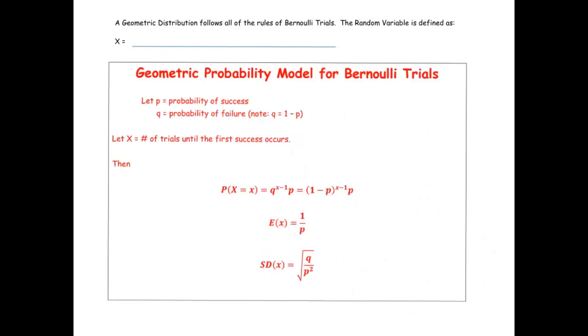So in general, a geometric distribution follows all of the rules of Bernoulli trials, which we mentioned. And the random variable is defined as X equals the number of trials until the first success occurs. Until the first success occurs. We were waiting for that. Success should often be in quotes because success doesn't necessarily mean it's the thing you want to happen. But obviously, you would have to define in the problem what you consider a success and the other outcome a failure. But the fact of the matter is that you're waiting for something to happen, and the number of trials until the first success occurs is what we define as our X.